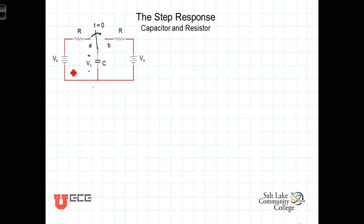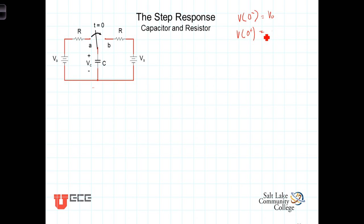So our voltage at T equals zero minus is V0, and the voltage right after the switching — V at zero plus — is going to be the same as the voltage on the capacitor. The moment after the switch moves is going to also be V0.